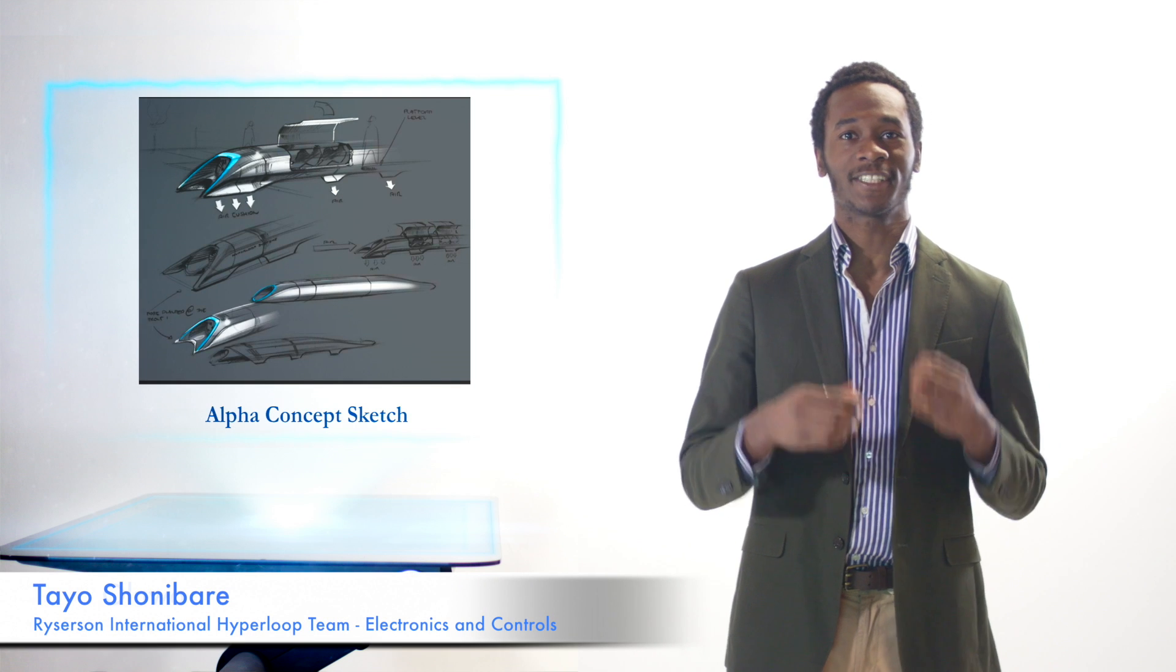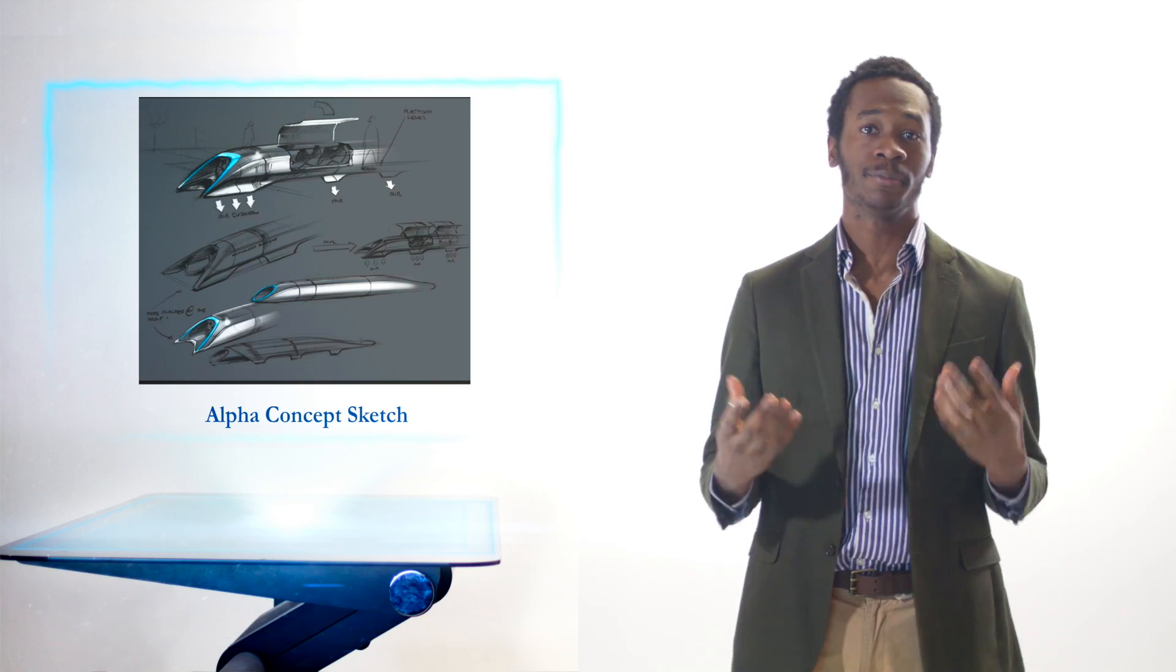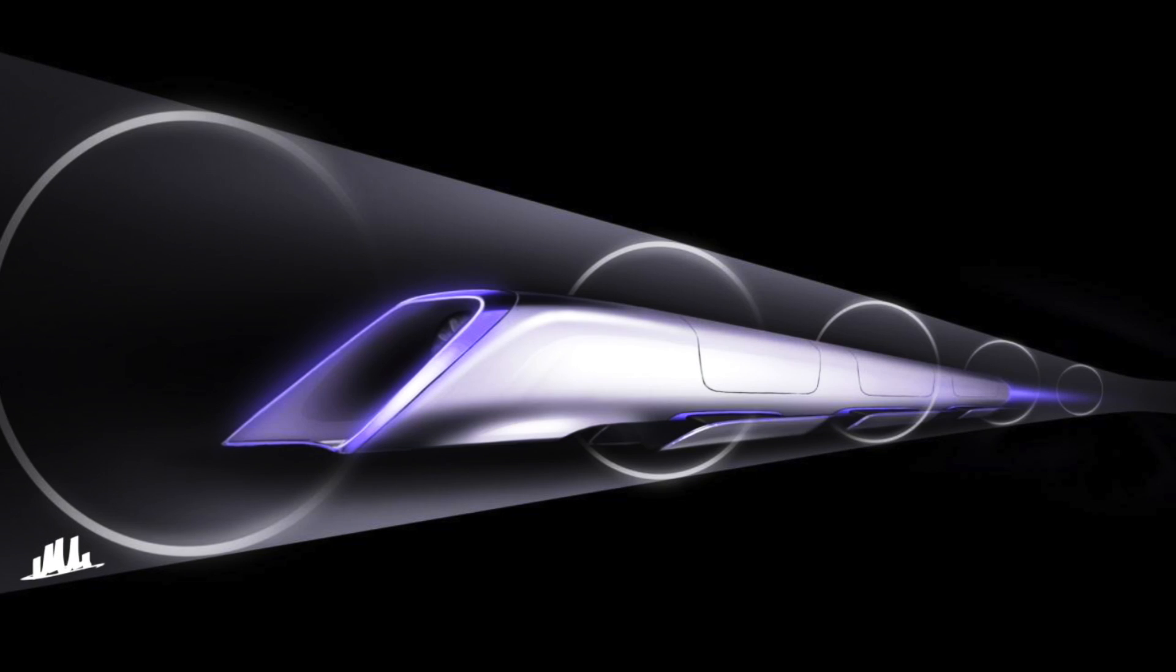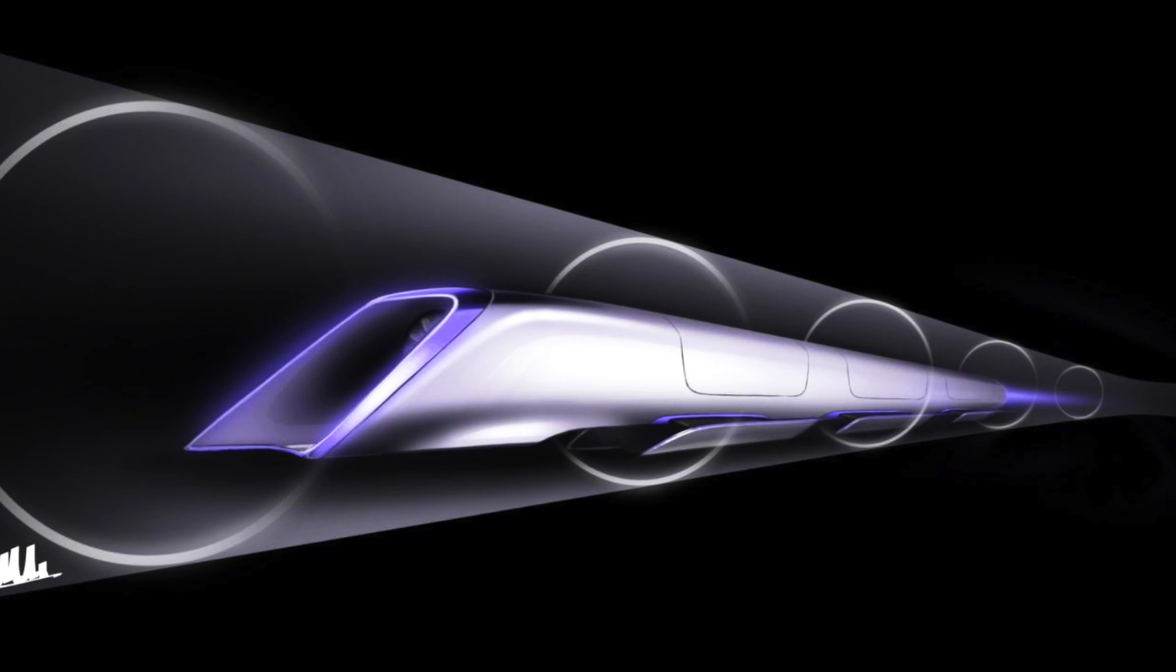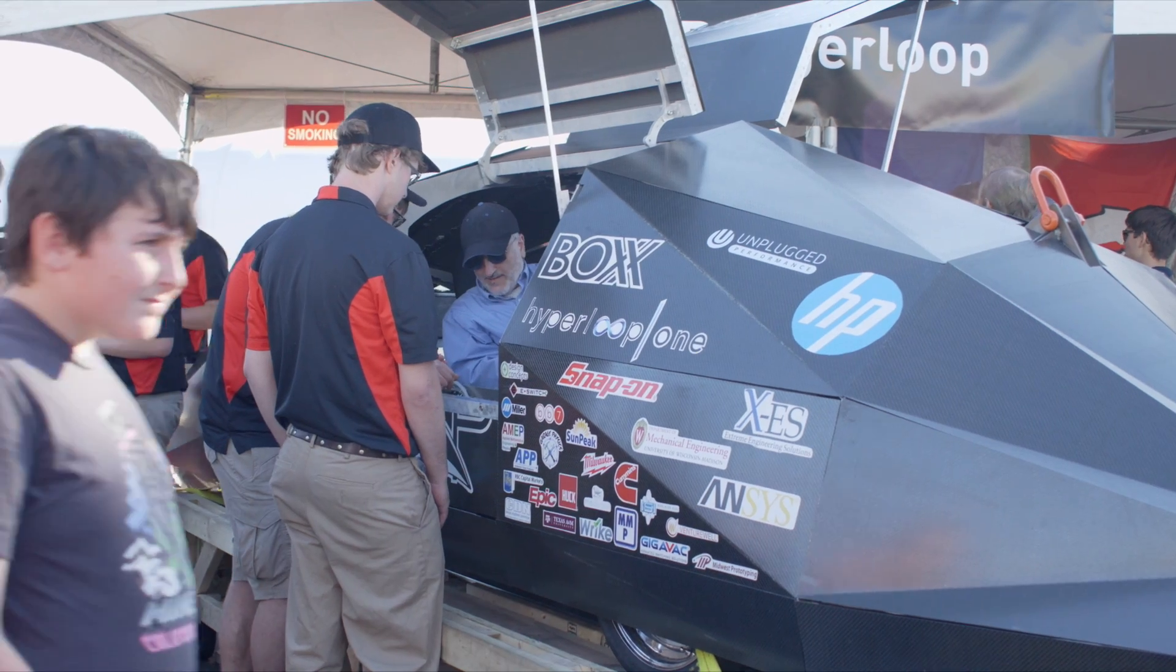In 2013, Elon Musk unveiled a new mode of transportation which people call the Hyperloop. People also refer to it as the fifth mode of transportation. The Hyperloop itself consists of a tube that is made completely vacuumed and a pod that levitates inside the tube.